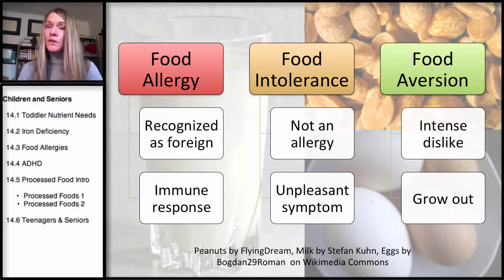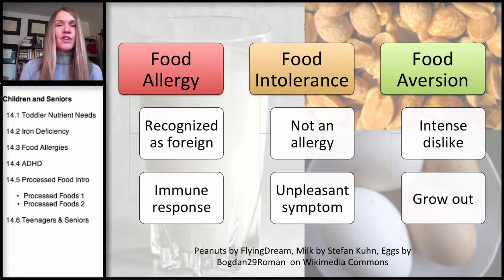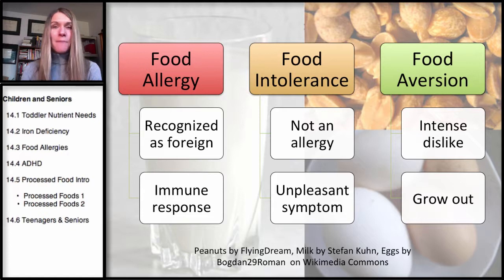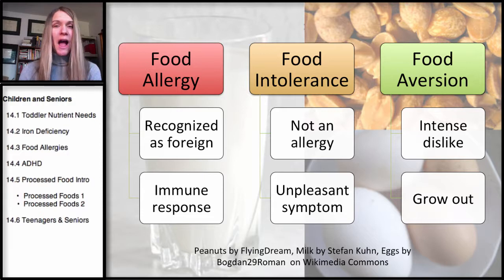A food aversion is an intense dislike, and most kids will have some sort of intense dislike of some food at some point. It could be representative of an underlying food allergy, so parents should pay attention. But you do need to constantly introduce new foods, because eventually most kids grow out of their food aversions. This is the end of our section on food allergies.